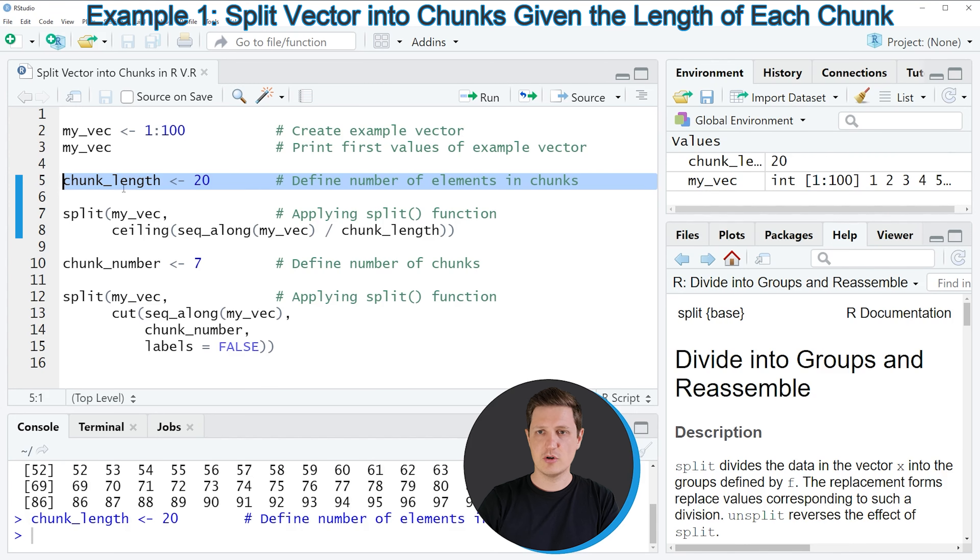If you run line 5 of the code, you can see at the top right of RStudio that we have created a new data object containing the number 20. And then we can split our vector by running lines 7 and 8 of the code. In these lines, we are using a combination of the split function, the ceiling function, and the seqalong function.